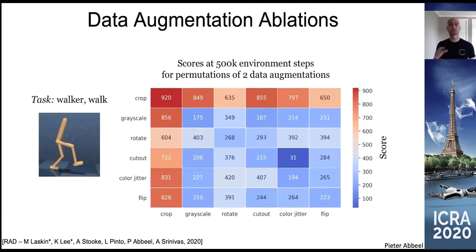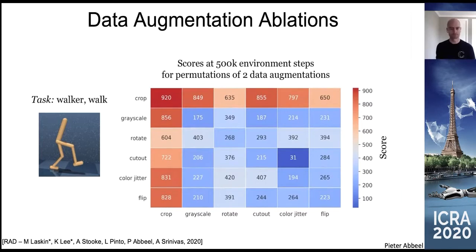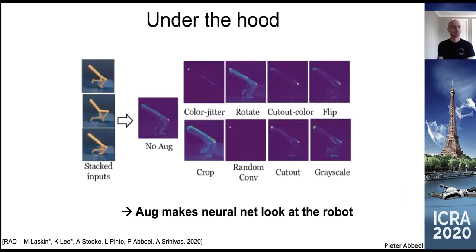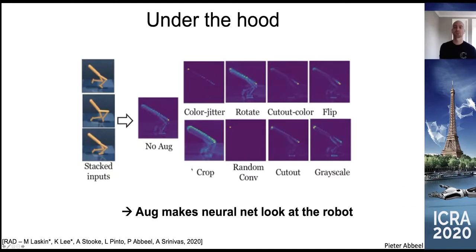We can ablate which augmentations matter most. Cropping turns out to be the most important — leaving it out drops performance very quickly, with other augmentations playing a secondary role. Looking at activation patterns: without augmentation, activations are diffuse across the image; with augmentation — especially cropping — the network strongly activates on where the robot is in the image, showing augmentations play a big role in helping the neural network focus on what's important.